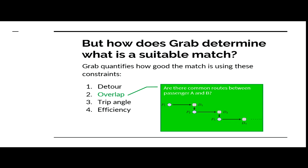Following that is the overlapping part. How they measure overlap is by finding the common itinerary routes and ensuring there is some form of overlapping to increase efficiency, which will be covered in part four.